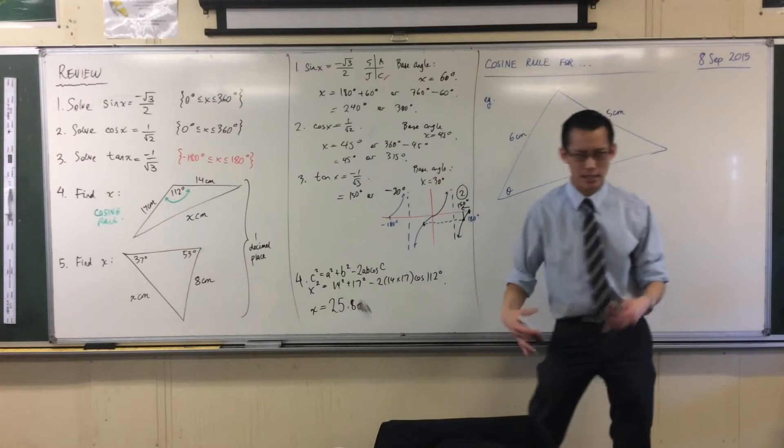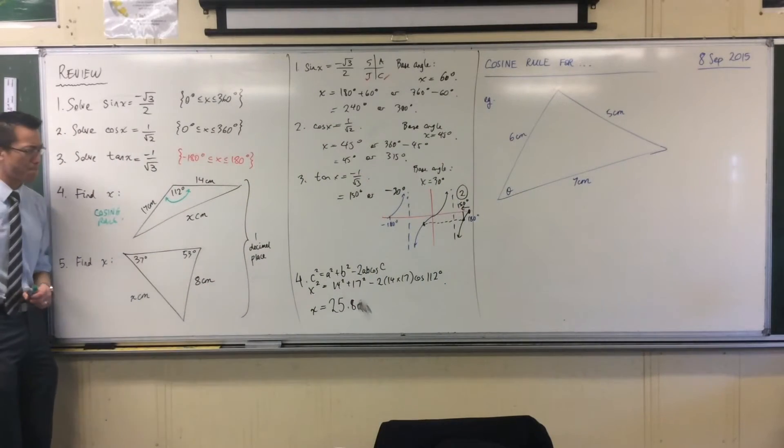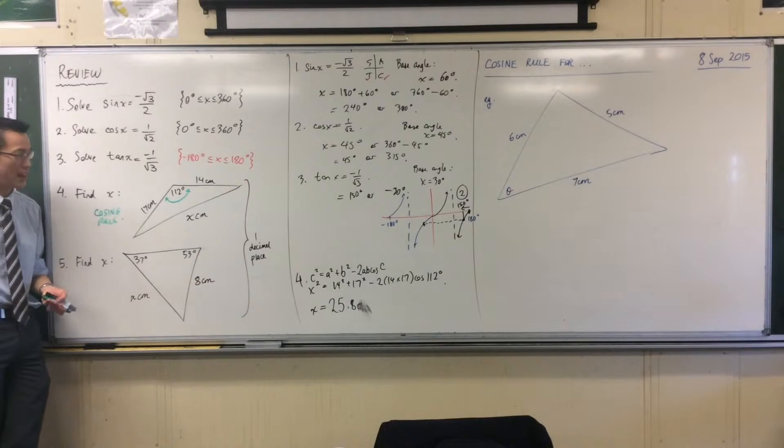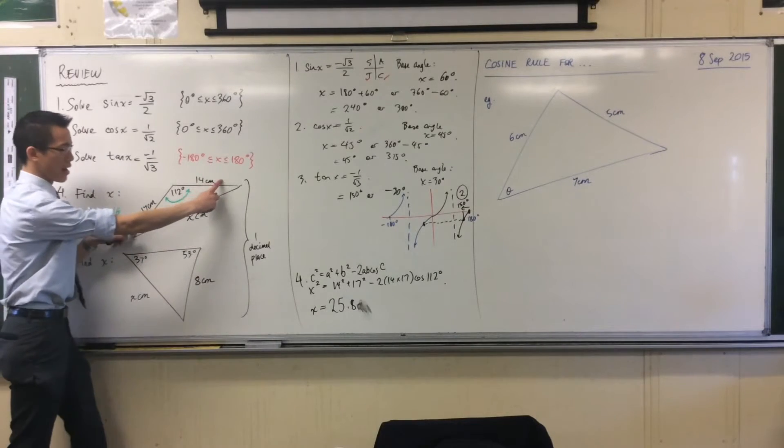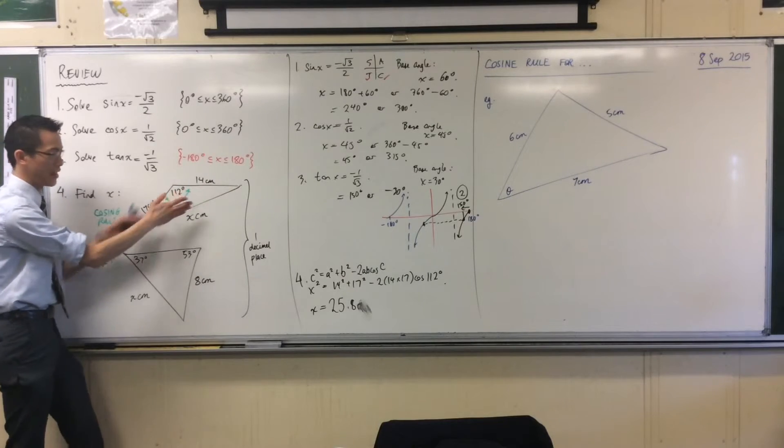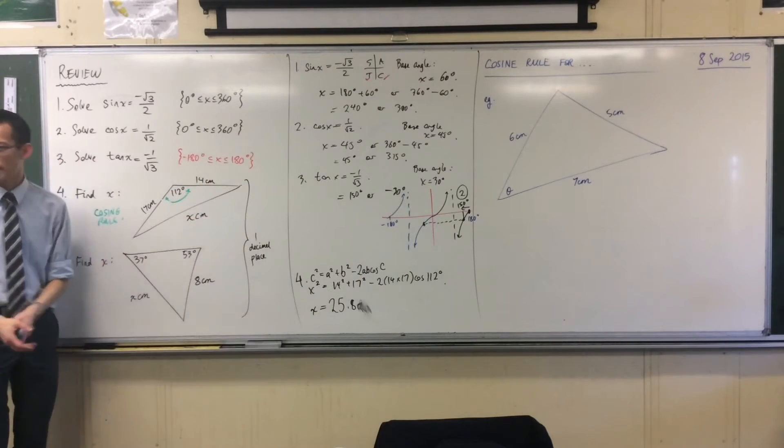Double check, does that make sense? You have a look at your original diagram. Is that about what you'd expect? I think so, it's in the right ballpark for starters. It's not like a hundred or a thousand or something like that. See how these sides are going to be shorter than this one because you've got a big angle over here that widens out the triangle. So you're going to expect that that's long. I think that sounds good.